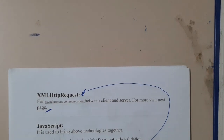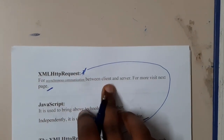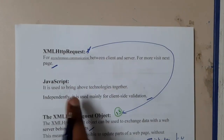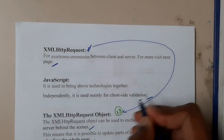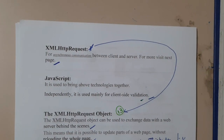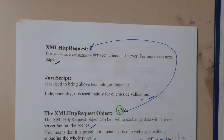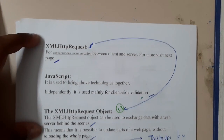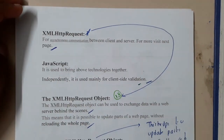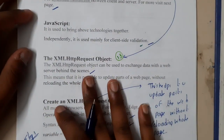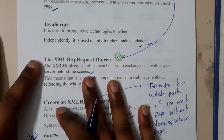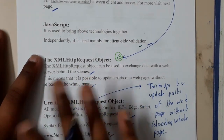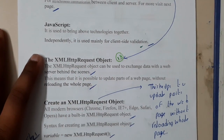We'll be discussing XMLHttpRequest clearly in the next lecture — what are the steps and everything. For asynchronous requests between the client and server, we'll be using this. JavaScript, as I hope everyone remembers, is used for front-end and dynamic operations. In the next lecture, we'll be doing an in-depth dive with the XMLHttpRequest object.